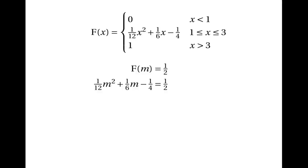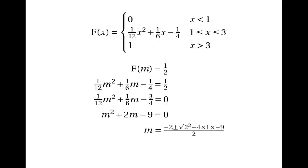Substituting m into the function gives us one twelfth m squared plus one sixth m minus one quarter equals one half. Rearranging: one twelfth m squared plus one sixth m minus three quarters equals zero. Multiplying everything by 12 gives m squared plus 2m minus nine equals zero. Using the quadratic formula, m equals minus two plus or minus the square root of four plus thirty-six, all over two, giving 2.16 or minus 4.16 to three significant figures. Since m must be between one and three, the median is 2.16.